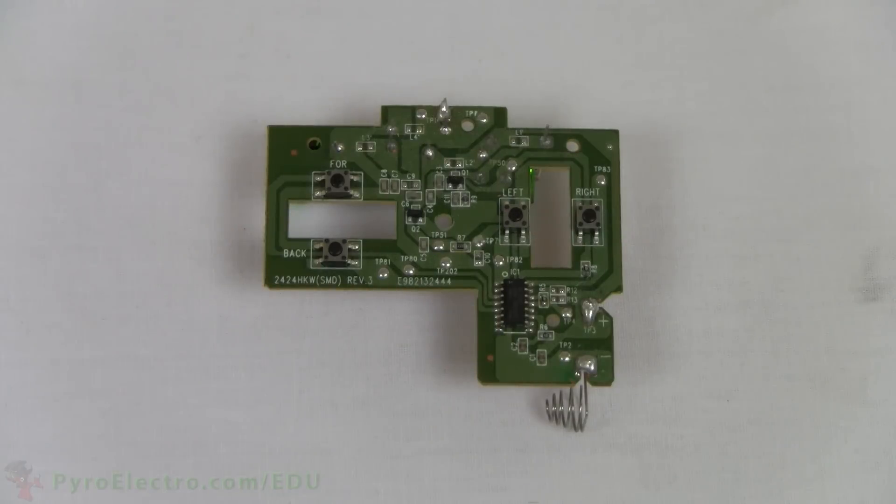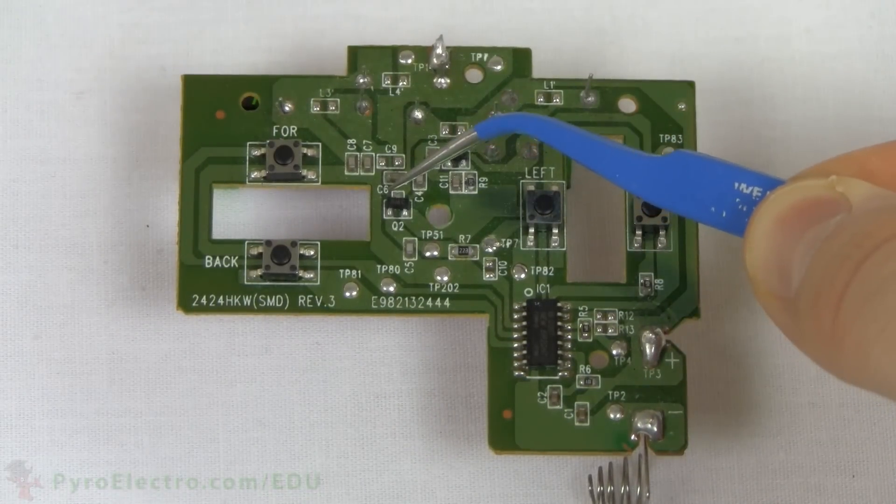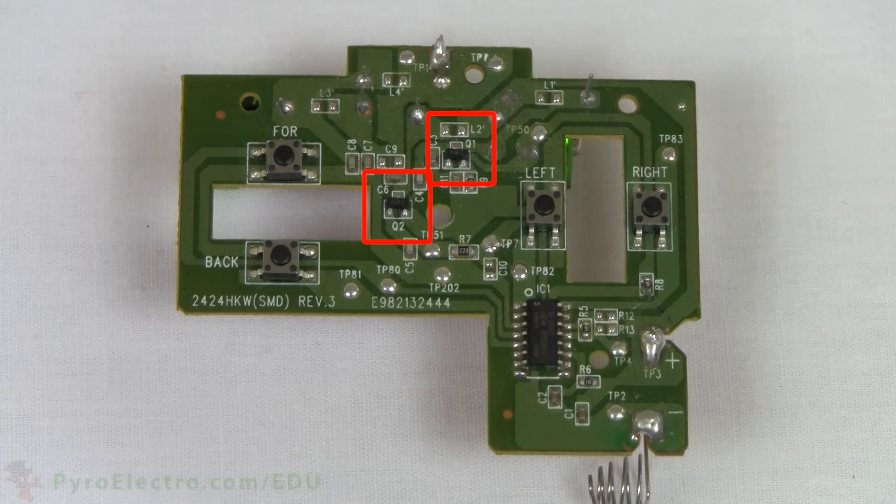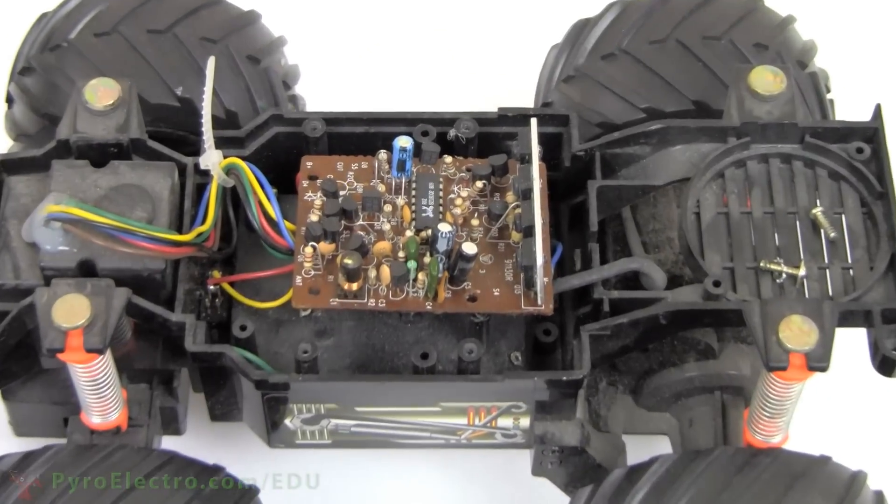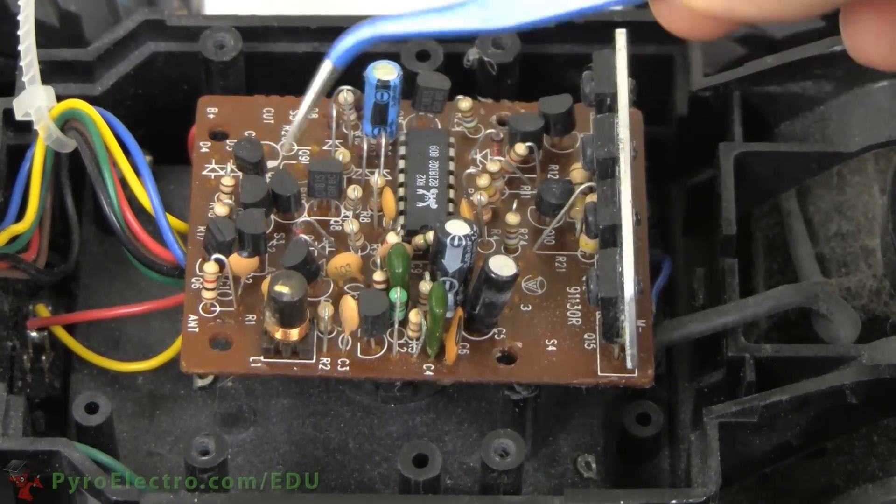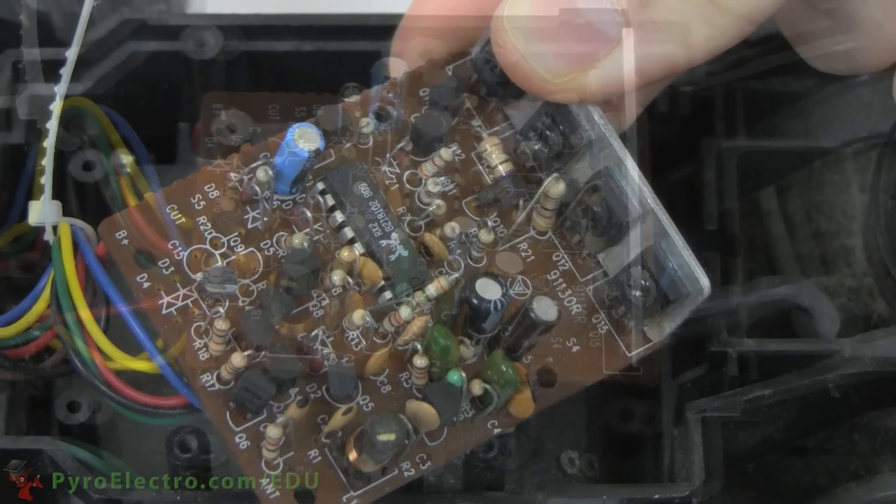Here is an RC remote control. We can see some surface mount transistors labeled Q1 and Q2. They are used to help amplify and pass wireless signals to an RC car. Similarly, here is the RC car. Taking a closer look, you can see many, many transistors all around the circuit board. Some are used for amplification, others are used for motor control.